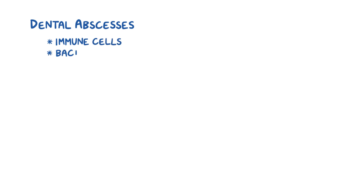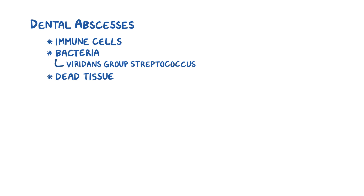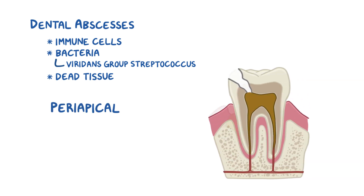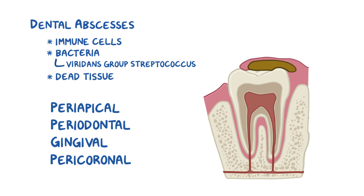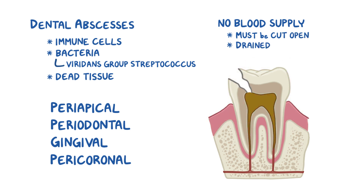As a quick recap: dental abscesses are a mix of immune cells, pathogens like bacteria such as the viridans group streptococci, and dead tissue. Common types include periapical, periodontal, gingival, and pericoronal abscesses. Because there's no blood supply to the middle of an abscess to deliver antibiotics, it usually needs to be cut open so the pus can drain out. For periapical abscesses, a root canal treatment or extraction must be performed on the offending tooth.